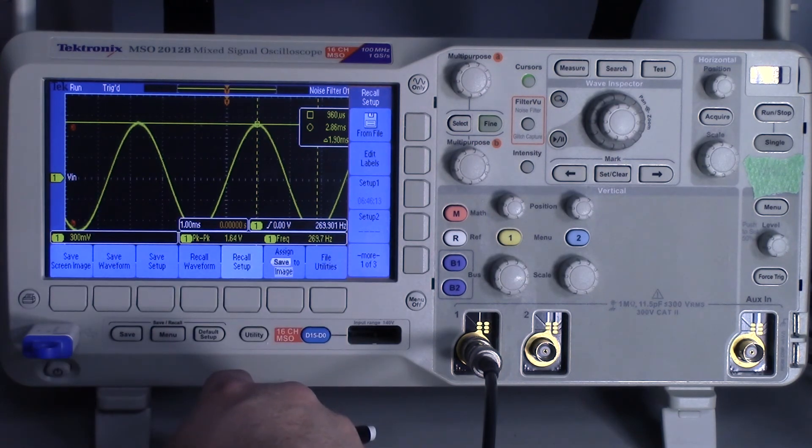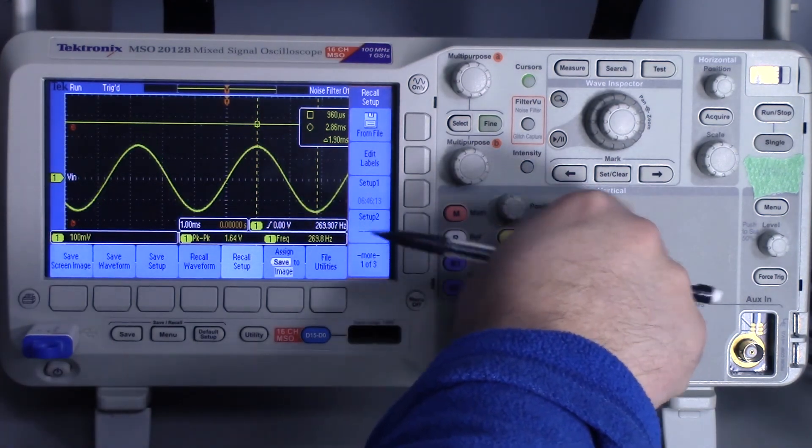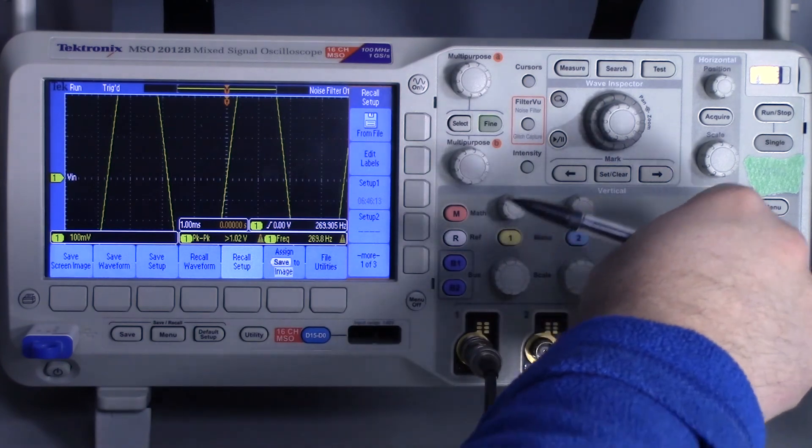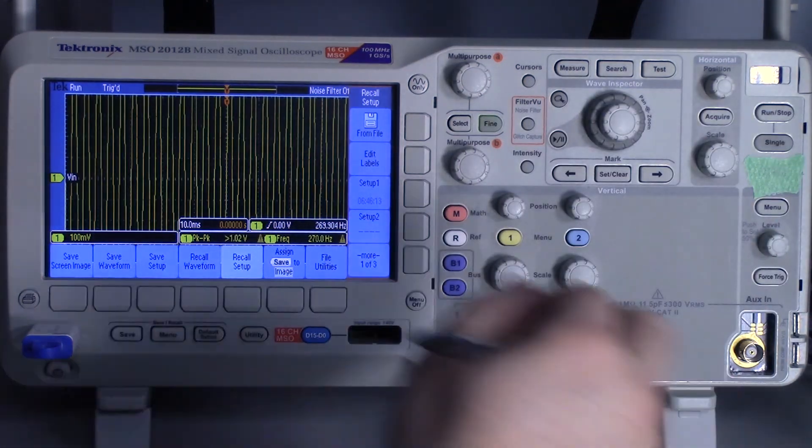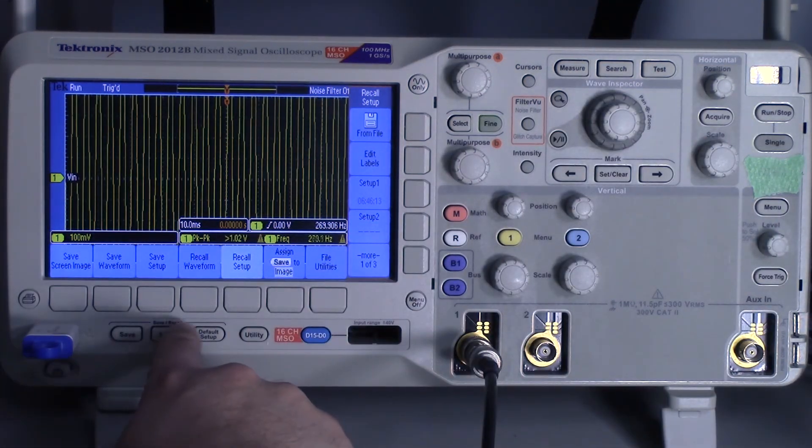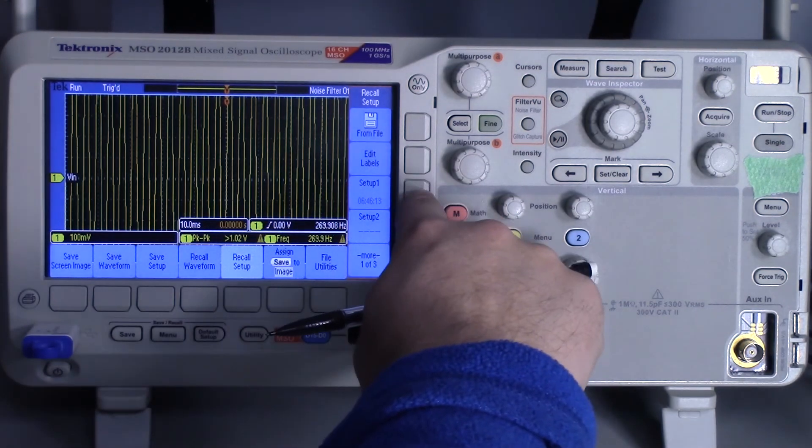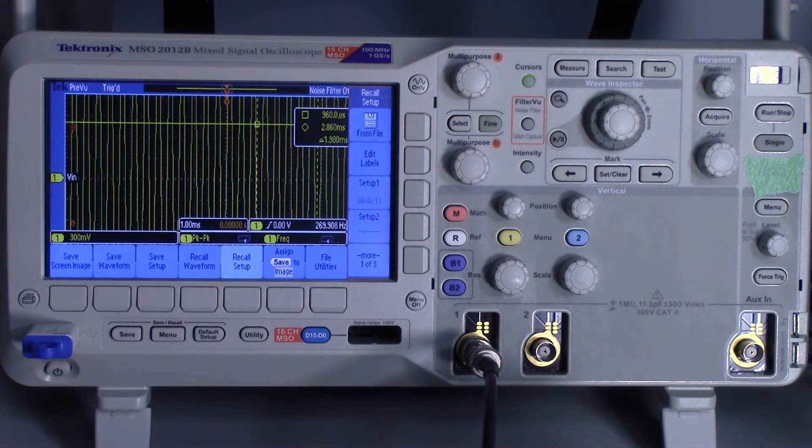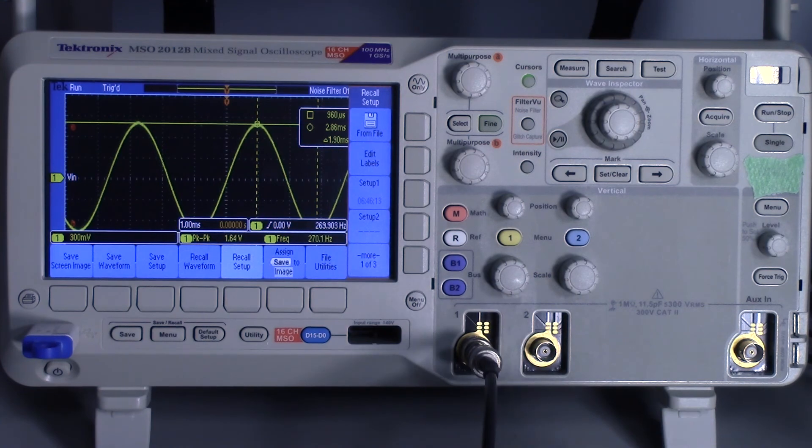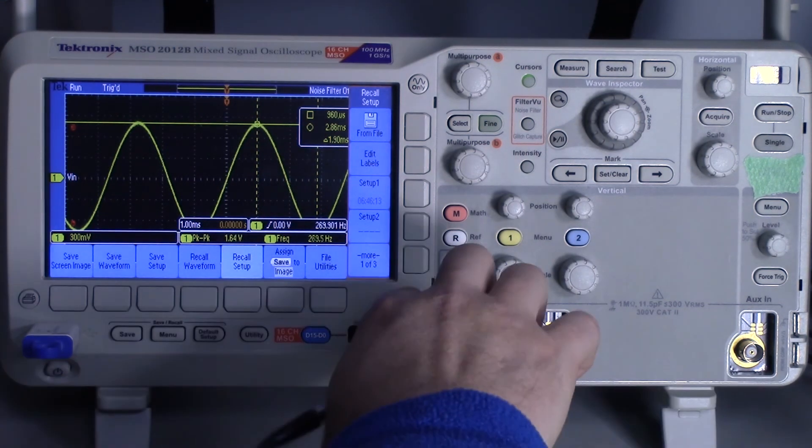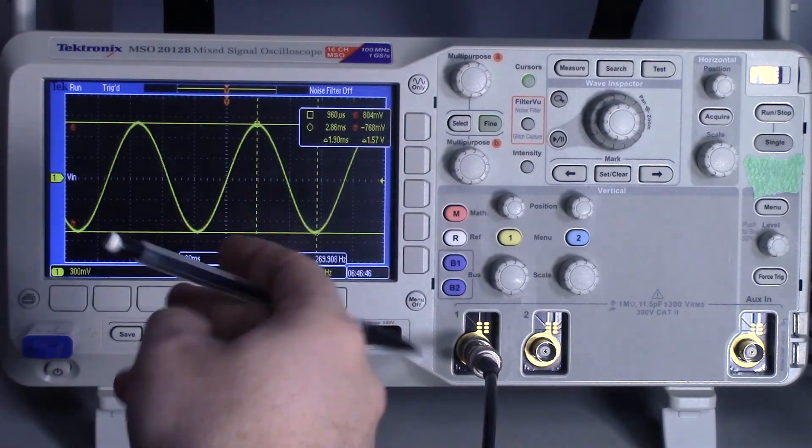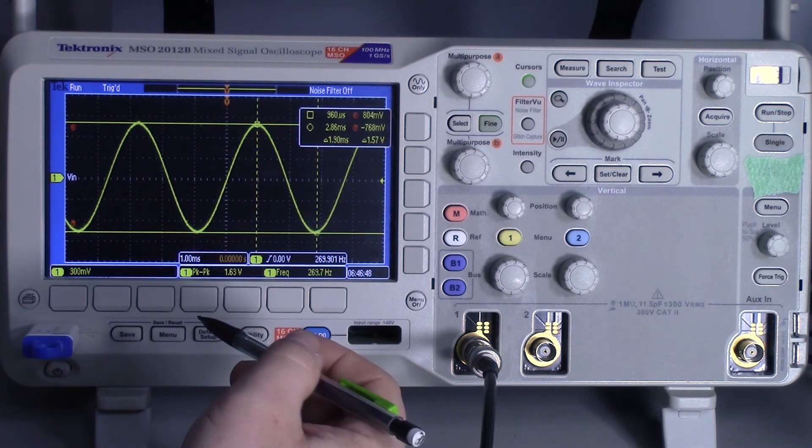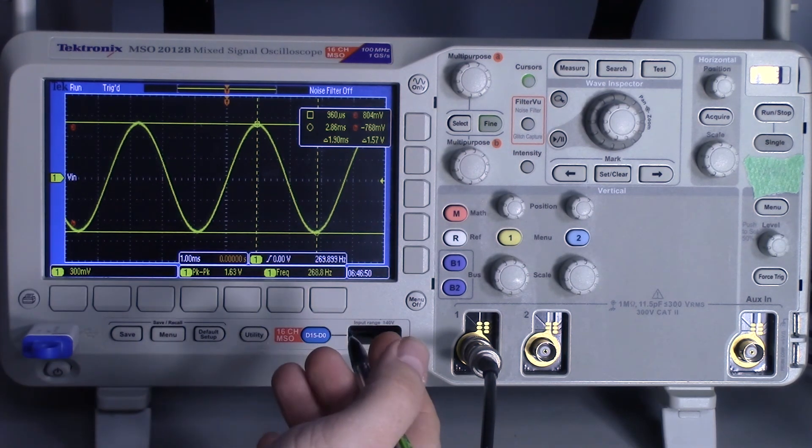Let's change the scale and turn that off. If I go into recall setup, setup one, it remembers the setup. This would be something more useful if you're doing something fairly repetitive or you had your own scope.